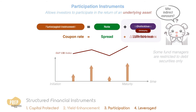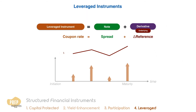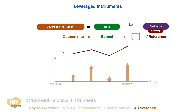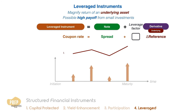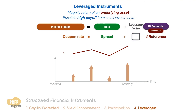We conclude with the last category: leveraged instruments. Leveraged instruments are very much like participation instruments, where the coupon rates are based on the performance of the underlying asset. However, in this case, the returns from the underlying can be magnified by a leverage factor. Leveraged instruments are created to magnify the returns of an underlying asset in order to offer the possibility of high payoffs from small investments. An inverse floater is an example of a leveraged instrument. In the case of an inverse floater, the leverage factor is a negative number.